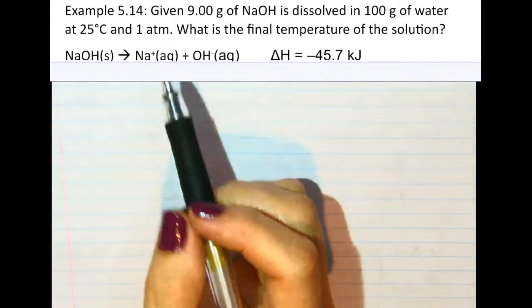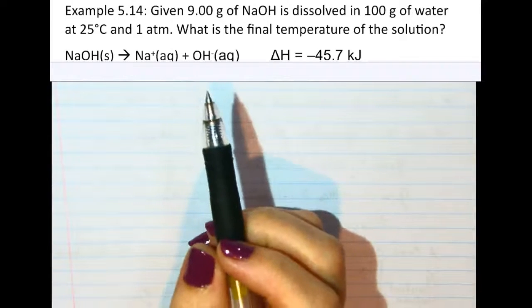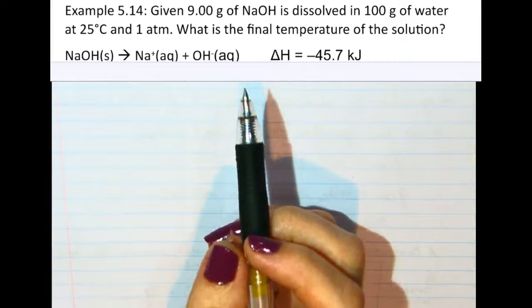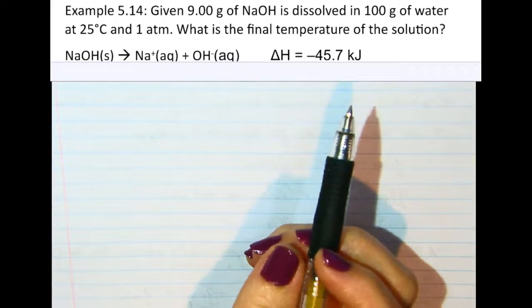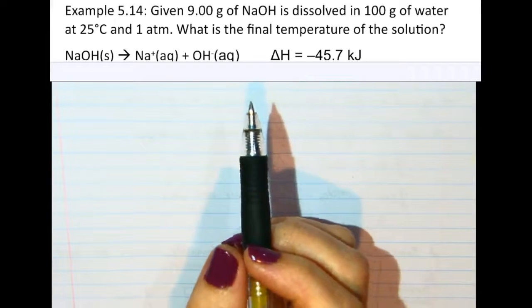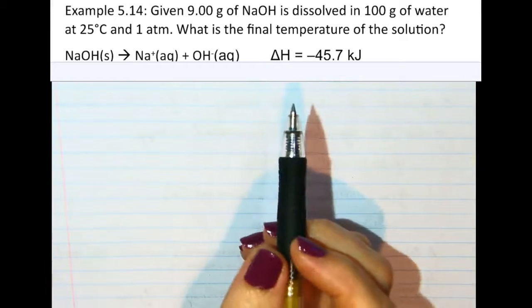So example 5.14, we're given 9 grams of sodium hydroxide, which is a salt, and it's going to be dissolved in 100 grams of water. So this is the process of dissolving. What's the final temperature of the solution?